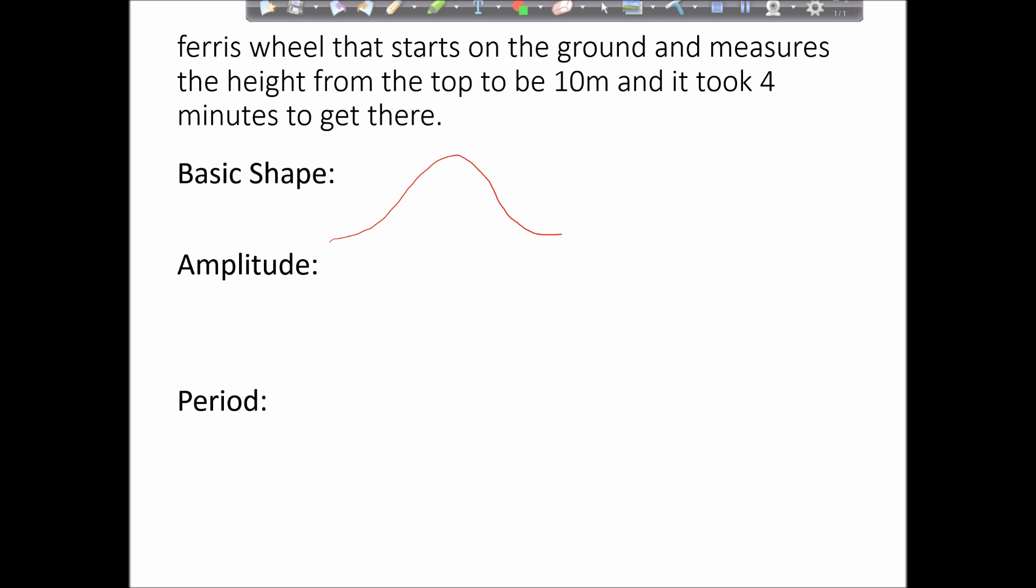So have a think about what graph is that? If it starts low, gets to its median, then top, median, and back down again. So if you said this is the negative cosine graph, you would be correct. So our basic shape is going to be negative cosine.